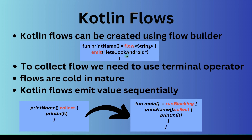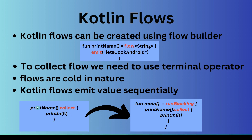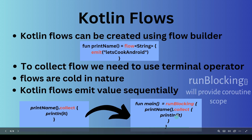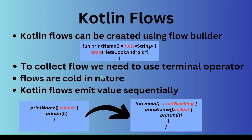We have seen that flows are cold in nature, so we cannot call `printName` directly. To collect a value from the flow, we use a terminal operator — writing `printName.collect` and then printing the value. The `collect` operator is suspending, so the complete statement needs a coroutine scope. In our example, we pass this inside a `runBlocking` block. Covered: creating a flow, using a terminal operator, cold flow nature, and finally — Kotlin flows emit values sequentially.